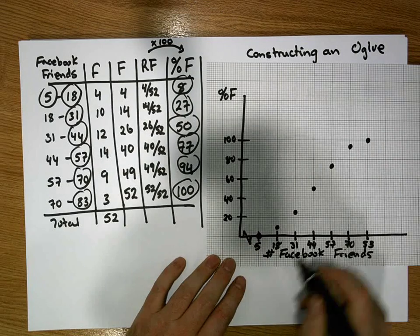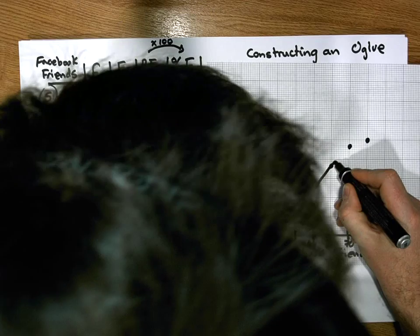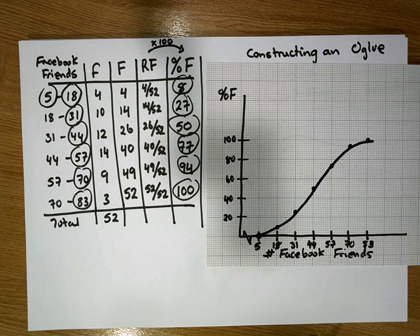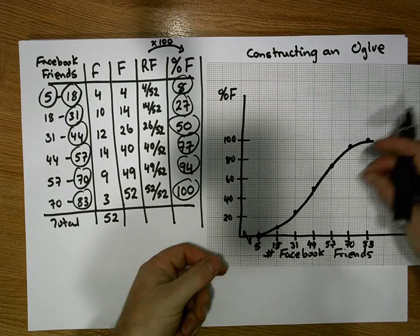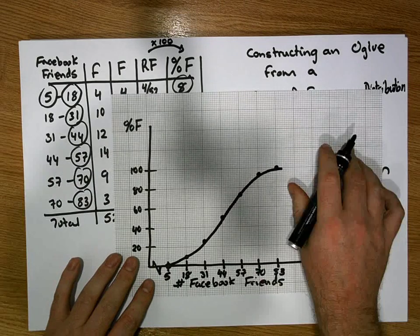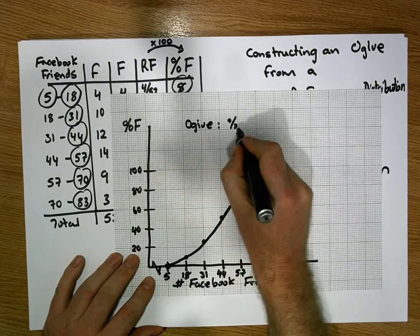So we're nearly there. Now what we do is we join the dots. If I join the dots, what I end up with is a curve that looks something like that. That's typically the shape of an ogive. It's an elongated S. So maybe what I'll just put up here is that this is an ogive, or a percentage cumulative polygon.